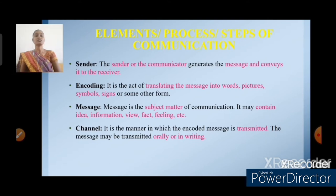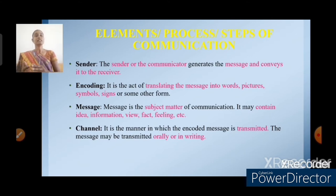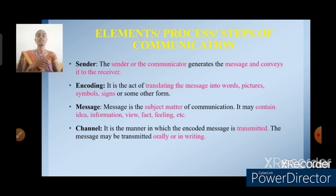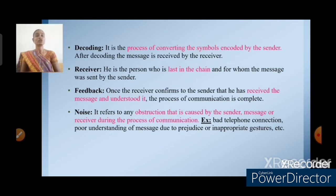Next, elements or process or steps of communications. First, sender — the sender or communicator generates the message and conveys it to the receiver. Encoding — it is the act of translating the message into words, pictures, symbols, or signs or some other form. Message — message is the subject matter of communication; it may contain idea, information, view, fact, feeling, etc. Channel — it is the manner in which the encoded message is transmitted; the message may be transmitted in oral or written format. Then decoding — it is the process of converting the symbols encoded by the sender, after which the message is received by the receiver.